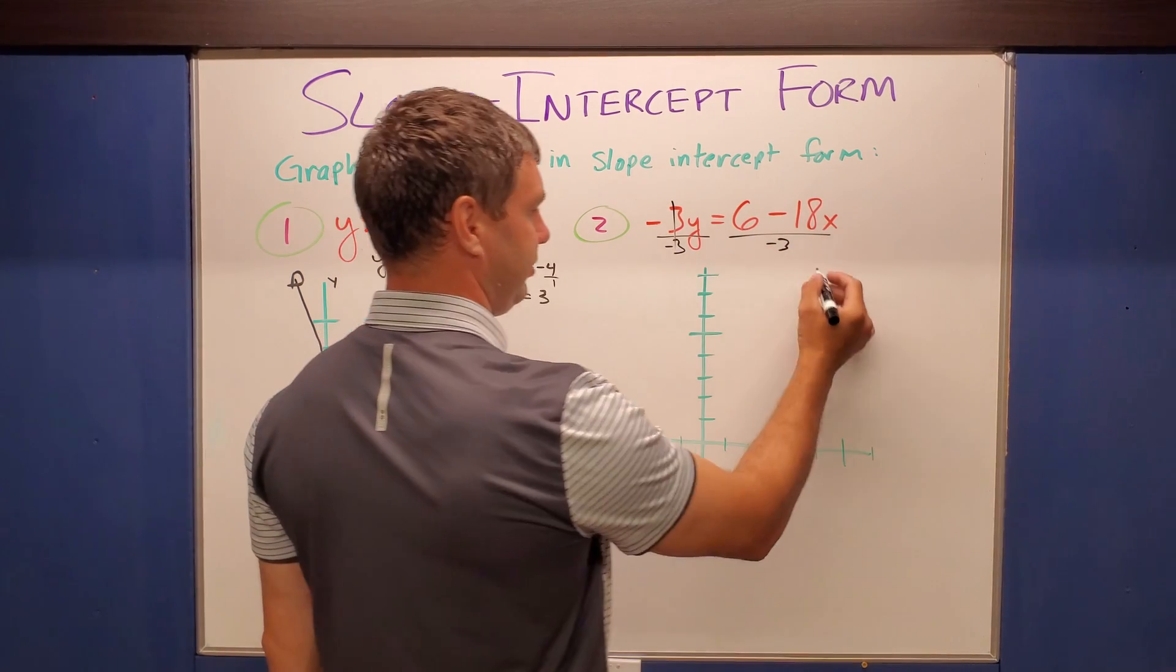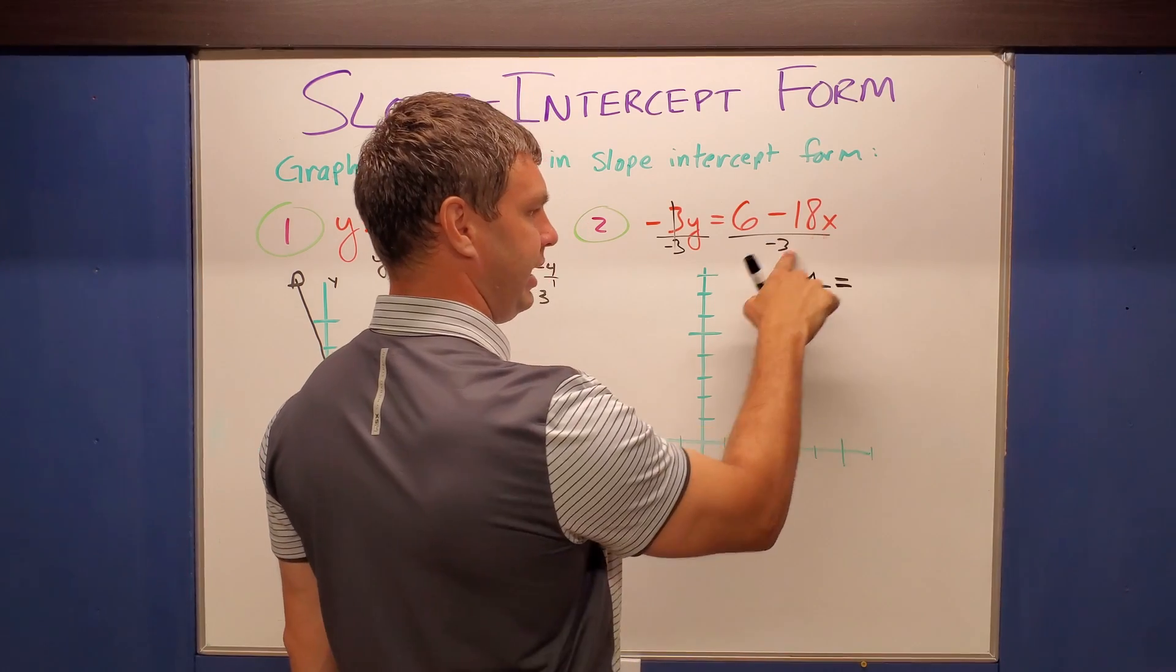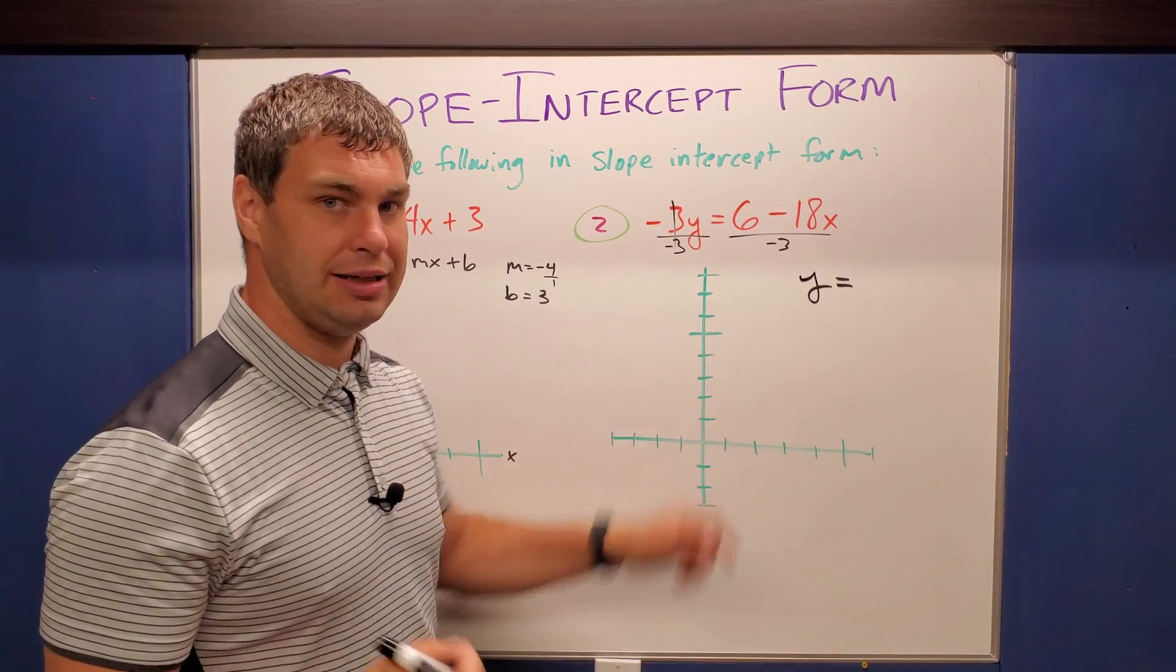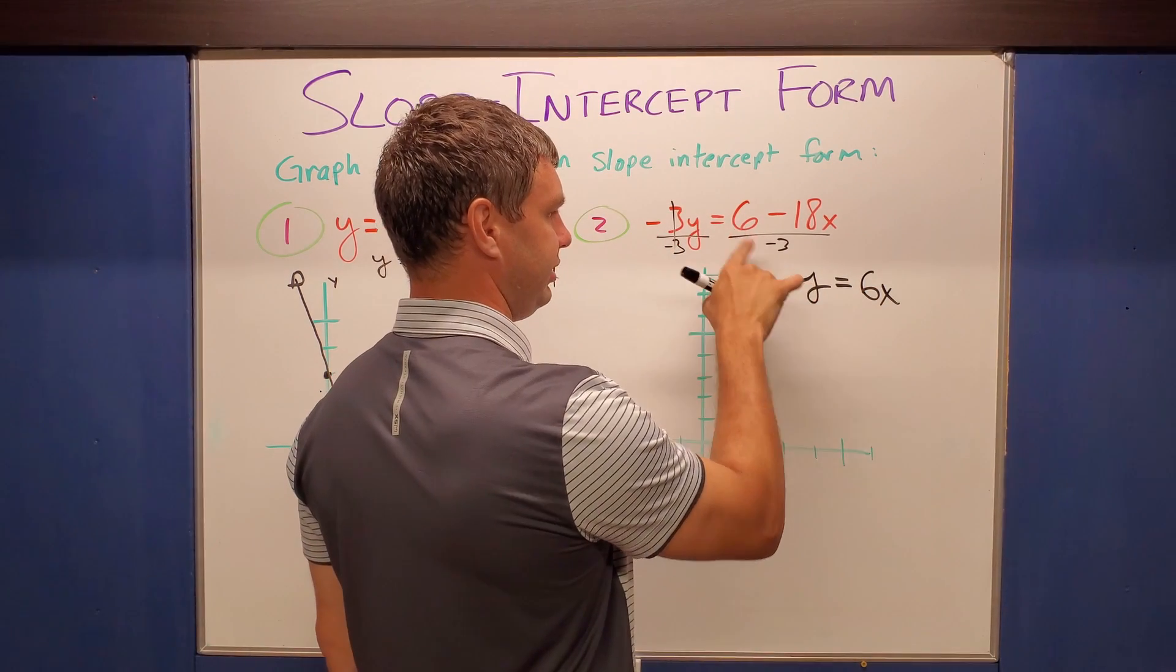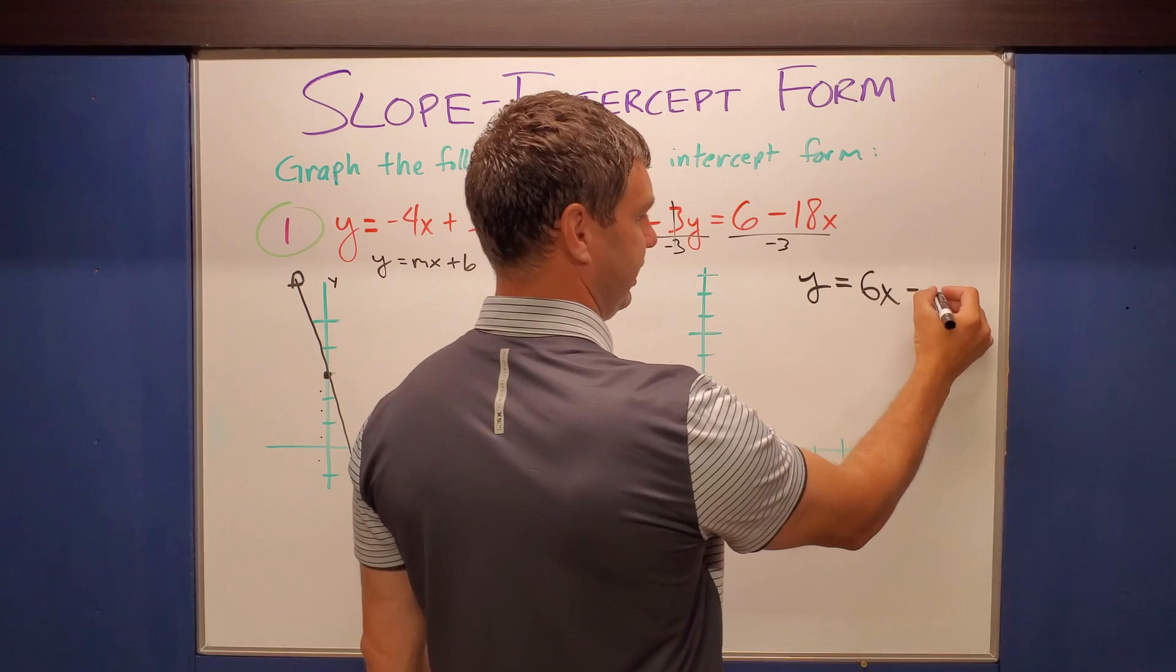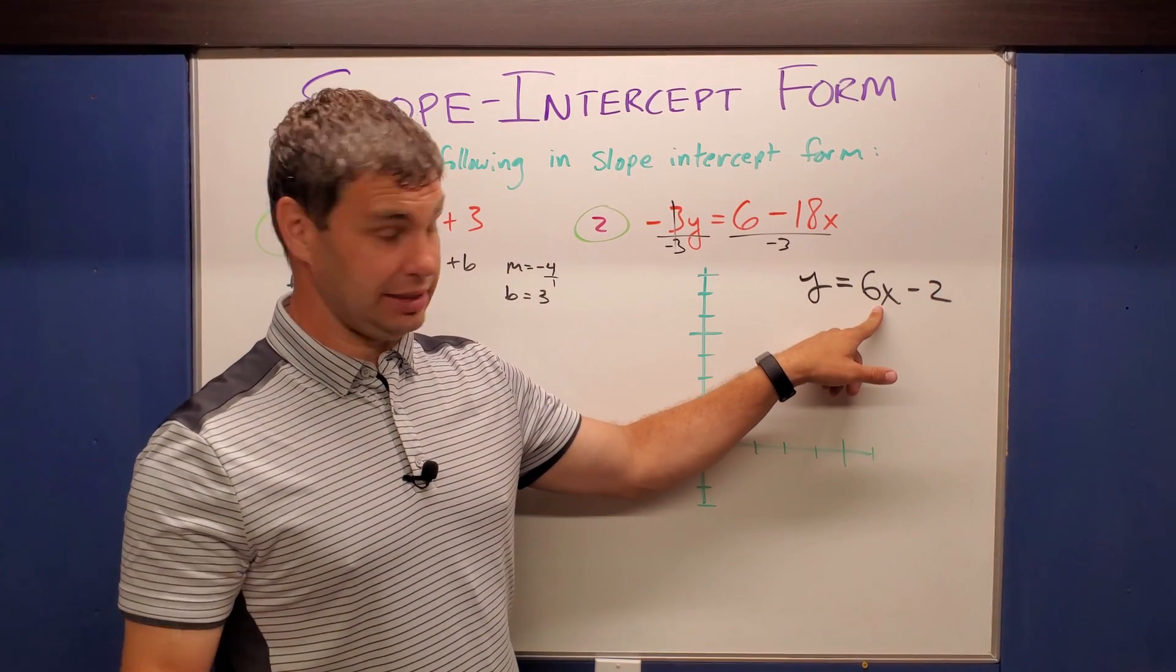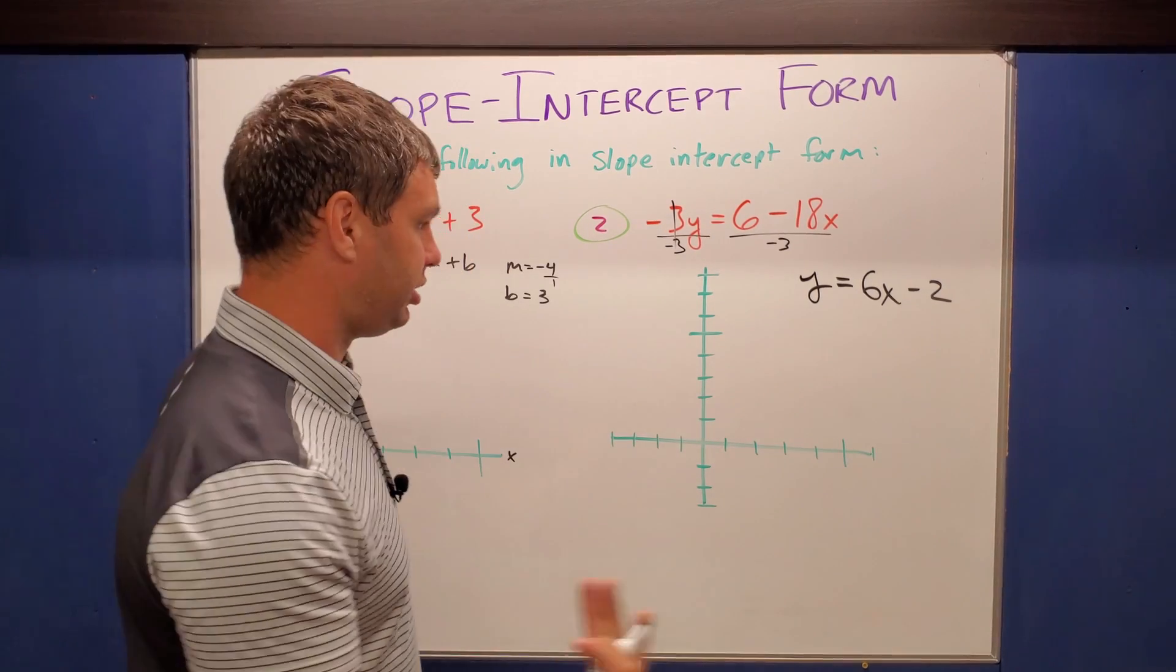Okay, so when I do that now I'm gonna have y, that's all that's left over, equals, and I'm gonna write the x term first. If I think negative 18x divided by a negative 3, that's a positive 6. Positive 6x. And then I'm gonna write the constant term, 6 divided by a negative 3 is a negative 2. Okay, now notice it's written in the form y equals m, 6x, plus b. B is the negative 2. Okay, so I start at the b. Always start at the b.